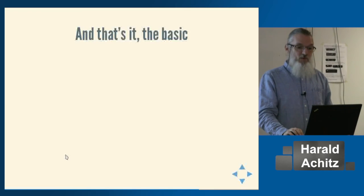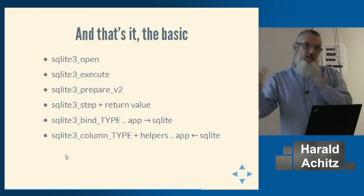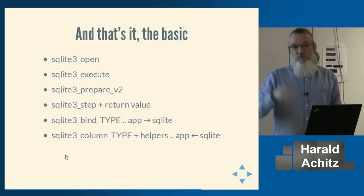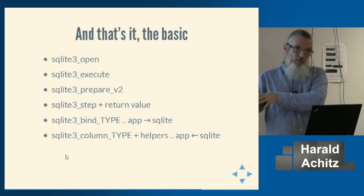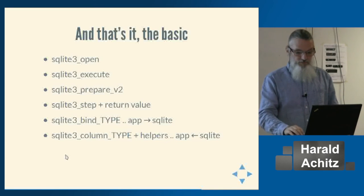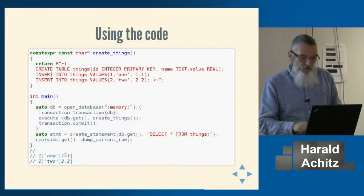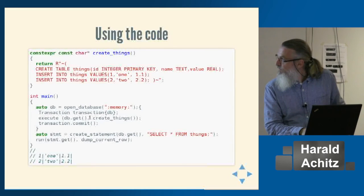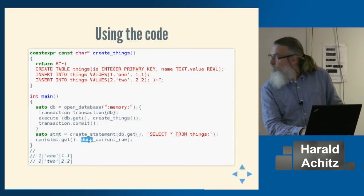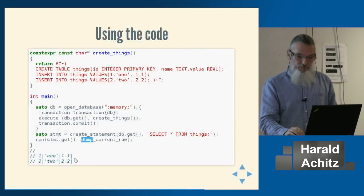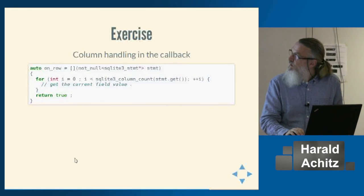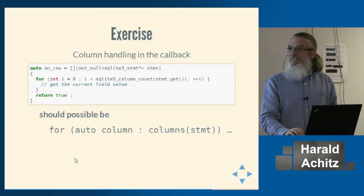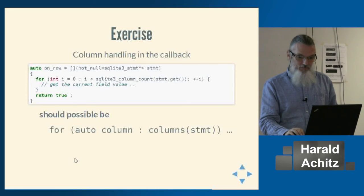The basic SQLite API in C++ covers: sqlite3_open to open a database, sqlite3_exec for arbitrary string statements, sqlite3_prepare_v2 for prepared statements, sqlite3_step plus return-value handling to execute and iterate results, sqlite3_bind_* to set parameters, and sqlite3_column_* to get data out. In usage it looks like: open database, begin transaction, create statement, call run() with the statement and a dump-row callback that iterates columns and writes them out.